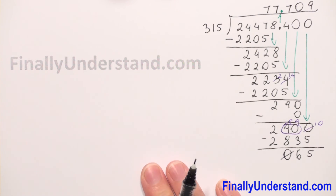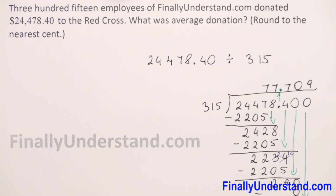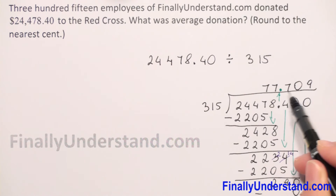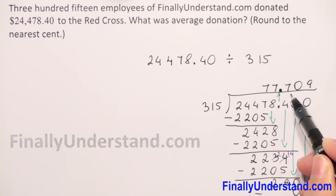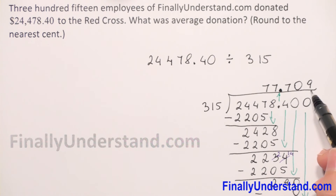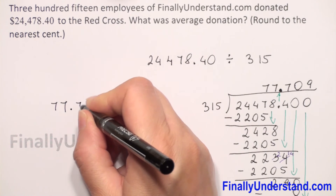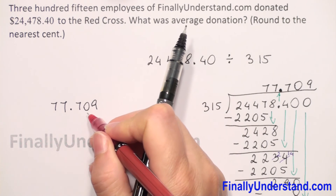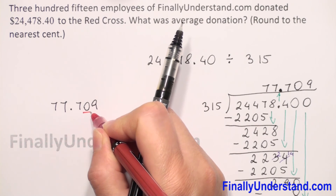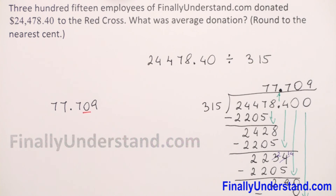Because we need to round to the nearest cent, we need only three digits after the decimal point — the hundredths place is our cents place, and we need one extra digit to do the rounding. We can stop the long division now. We got 77.709. We underline the hundredths place, which is the second digit after the decimal point.